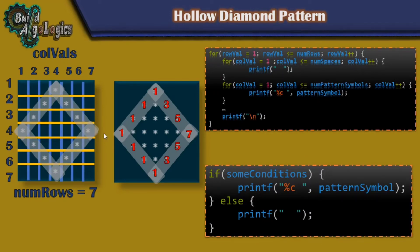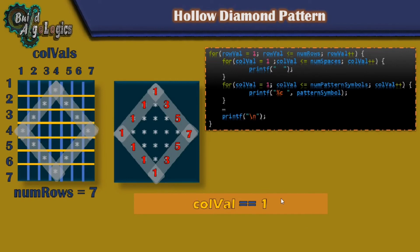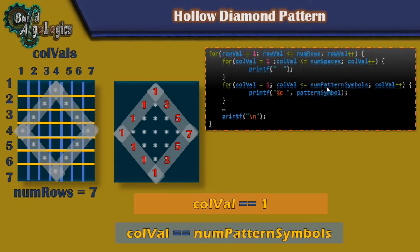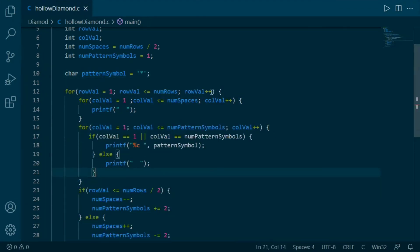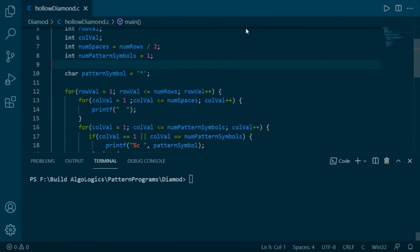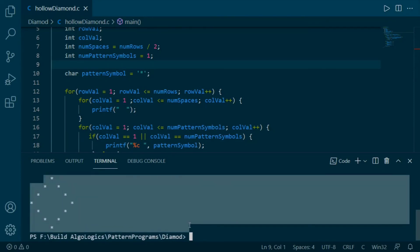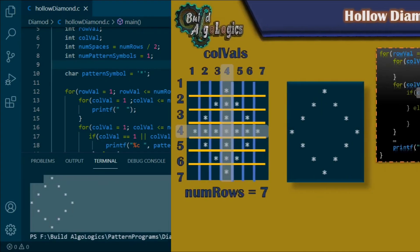Let's derive our condition to print the border only. The first condition covers when the column equals 1, and the second condition covers the last value of the column, which equals the number of pattern symbols. So: print stars when column equals 1 or when column equals num_pattern_symbols, else print spaces. We add this condition to our solid diamond code and run it — we successfully get our hollow diamond pattern printed.